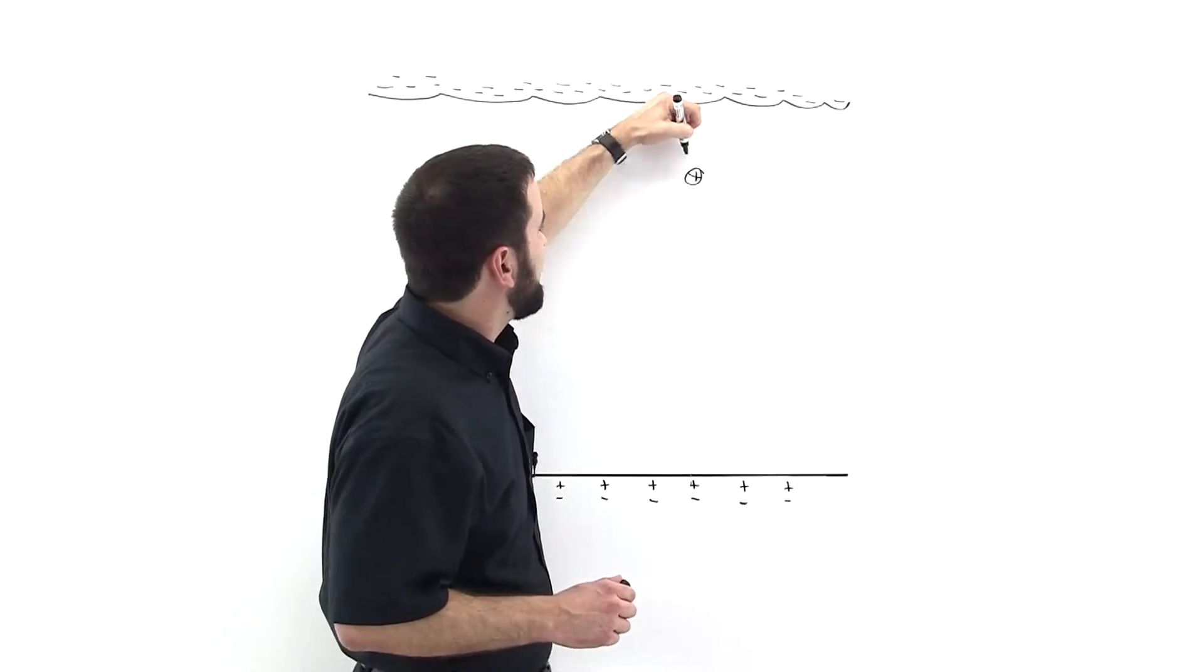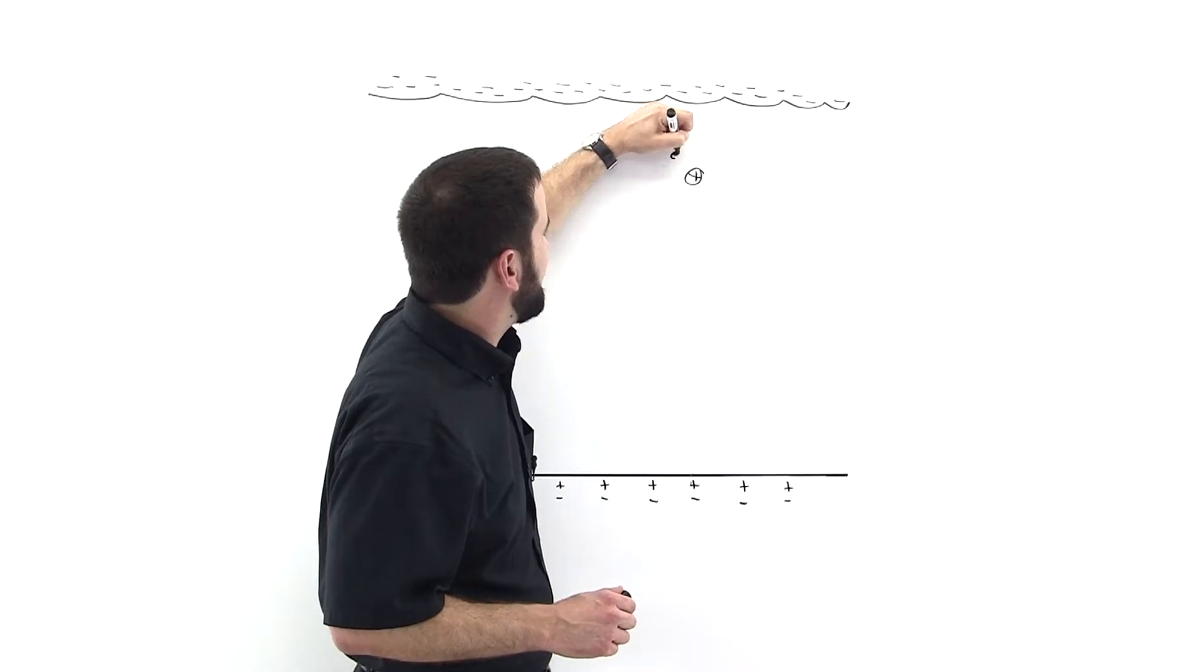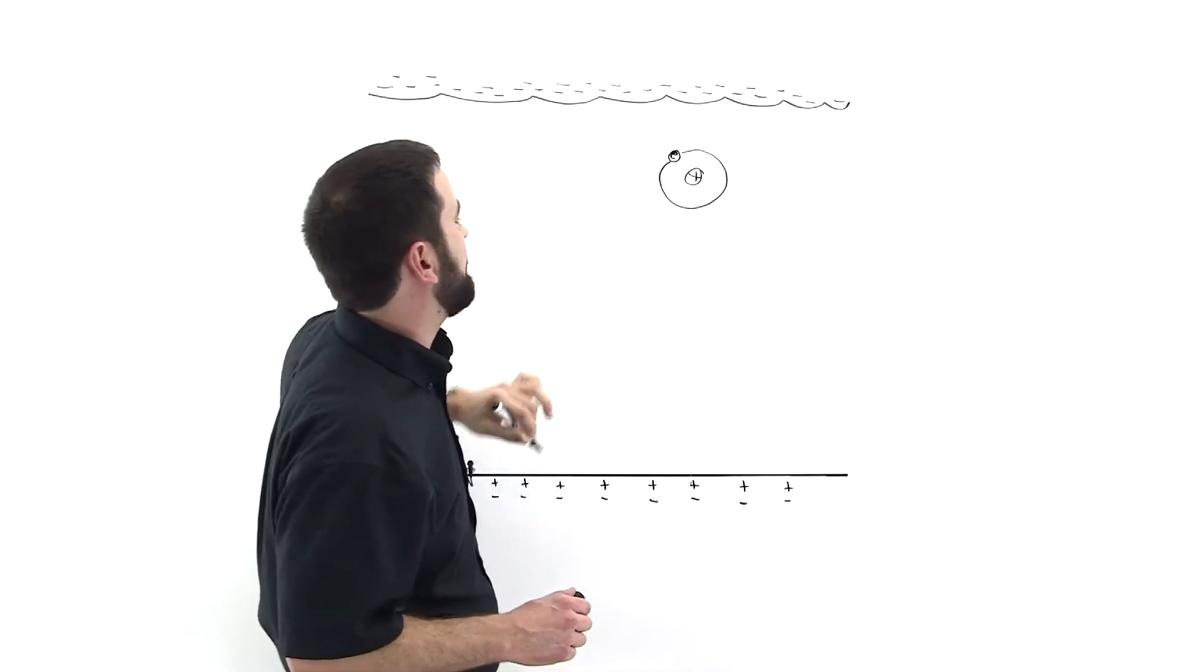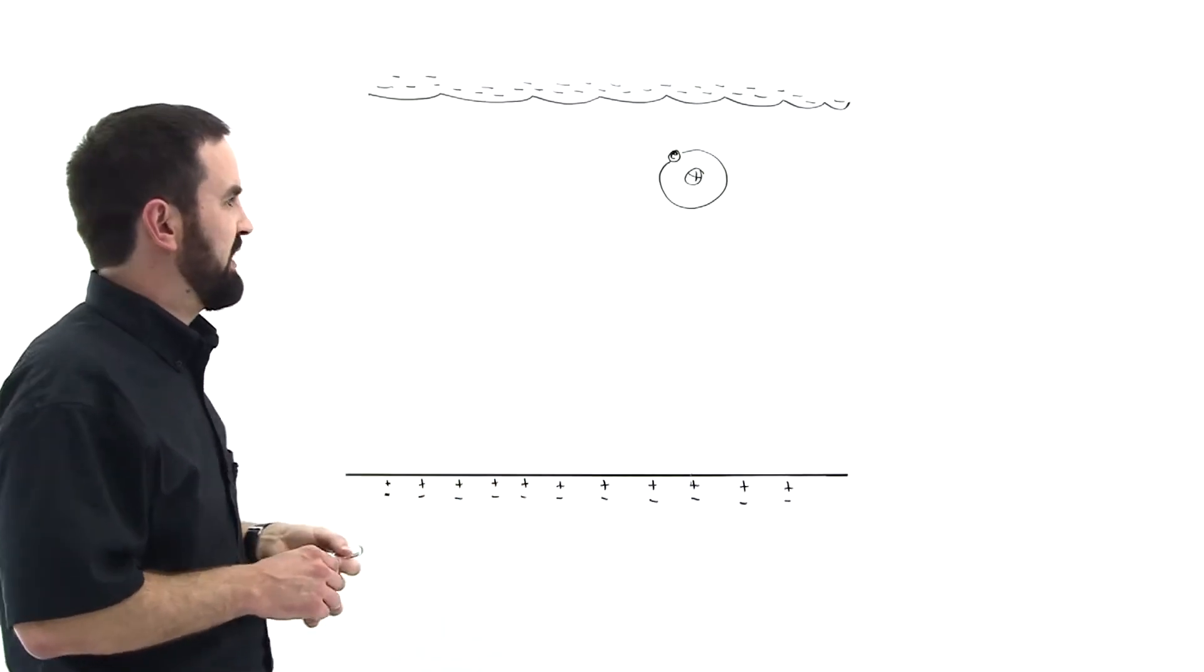So we have a proton here, and let's say there's an electron out here in the orbit, and we're going to just model it using the planetary model, the one that we remember from grade school.